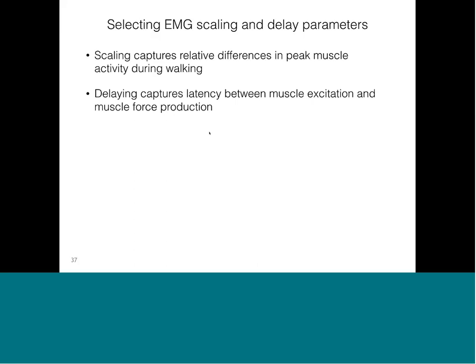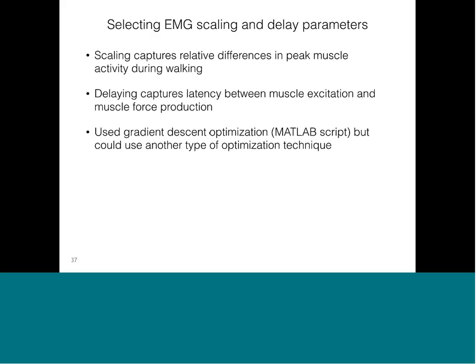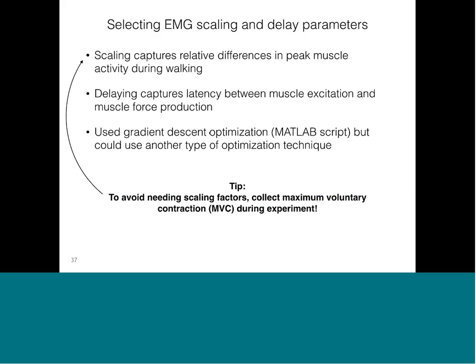We also needed to delay the EMG signal to capture the latency between muscle excitation and force production. Given the specific filtering frequency and order we chose, we did not know what delay was ideal. Therefore, to select scaling and delay parameters, we performed a gradient descent optimization scripted in MATLAB. This process was quite time intensive. To potentially avoid this in the future, I would recommend collecting maximum voluntary contraction data during your experiment — if you have MVC, you can normalize your EMG to MVC, which naturally captures relative differences in peak muscle activity. Because we did not measure MVC in our experiment, we had to go through the process of selecting scaling factors.